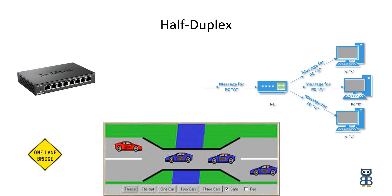Half-duplex allows communication in both directions, but not at the same time or simultaneously. Signals travel in both directions over a medium, but only one direction at a time. A very narrow bridge over a river is an example — it is used for both incoming and outgoing traffic, but only one side can move at a time. A hub operates at half-duplex mode.